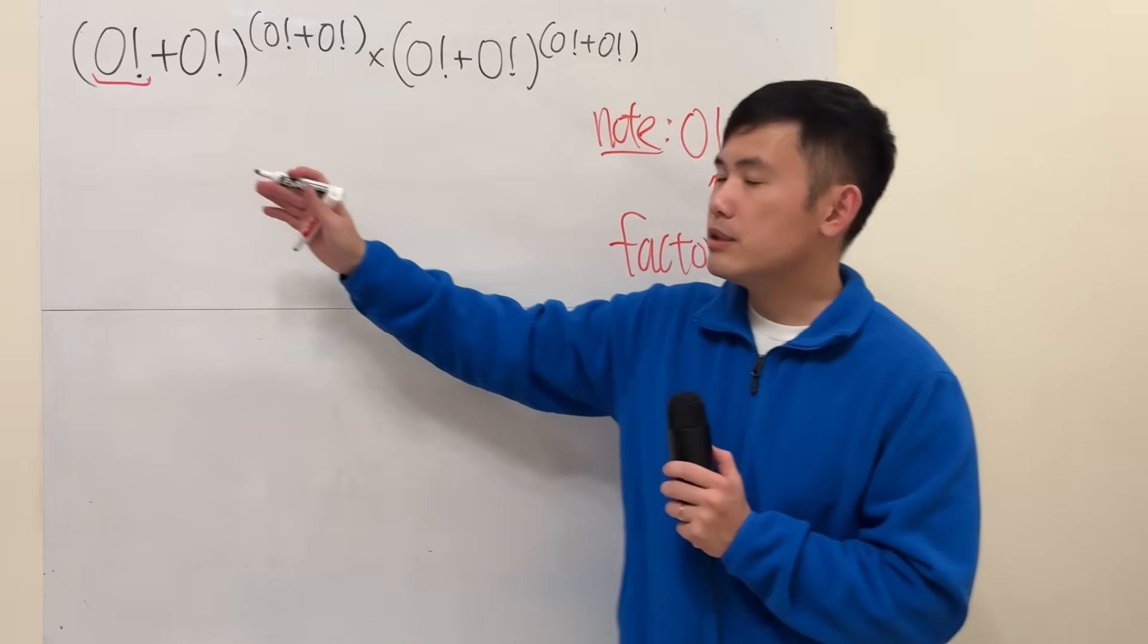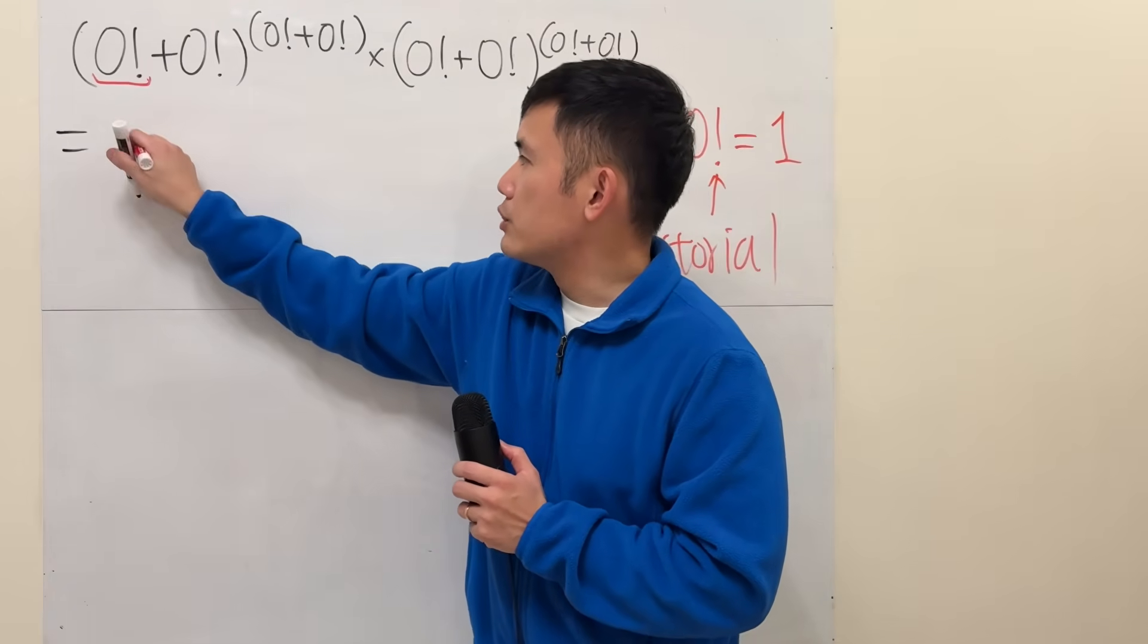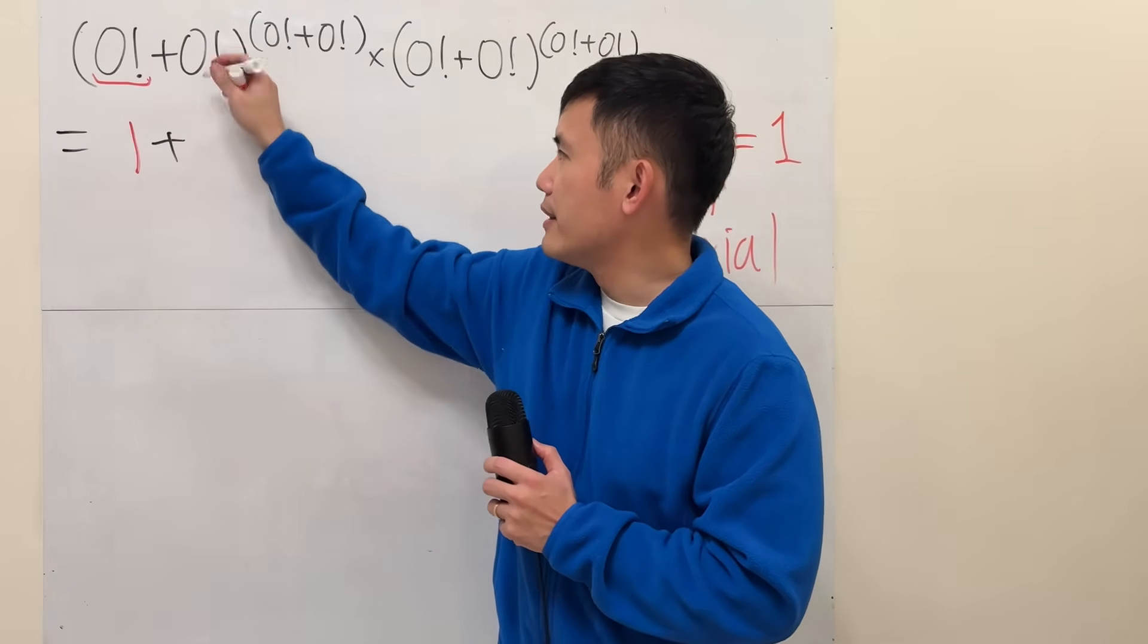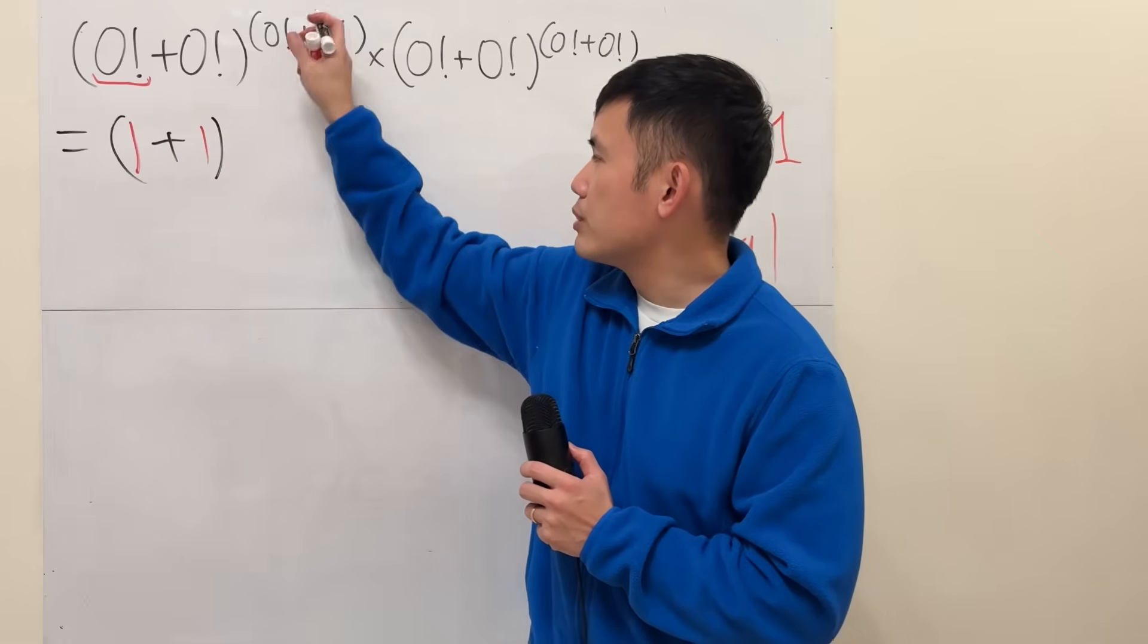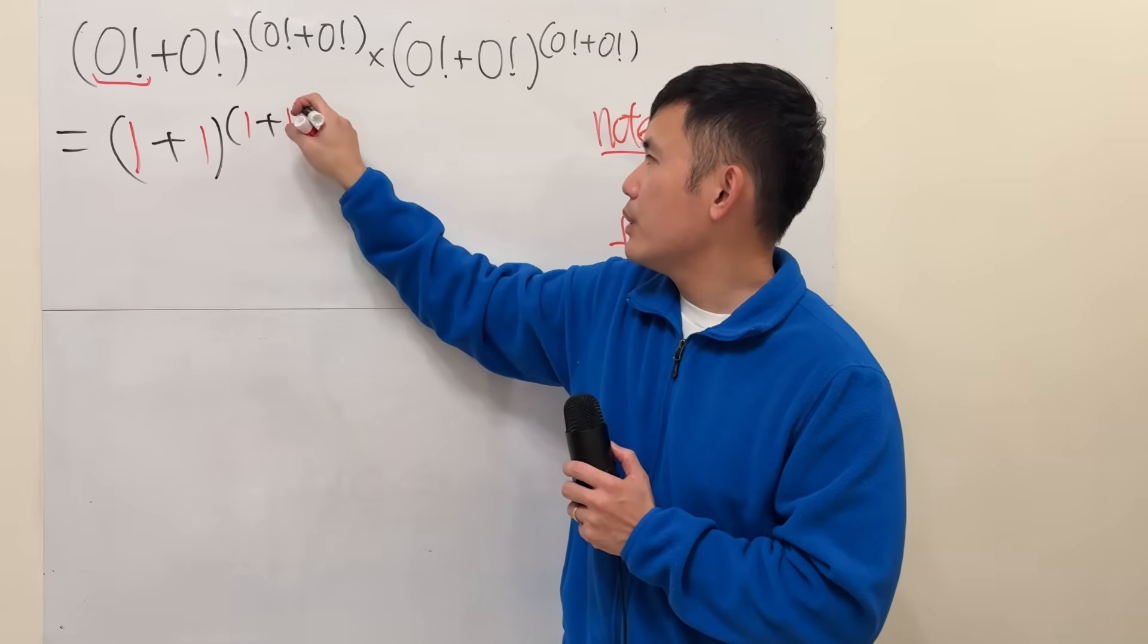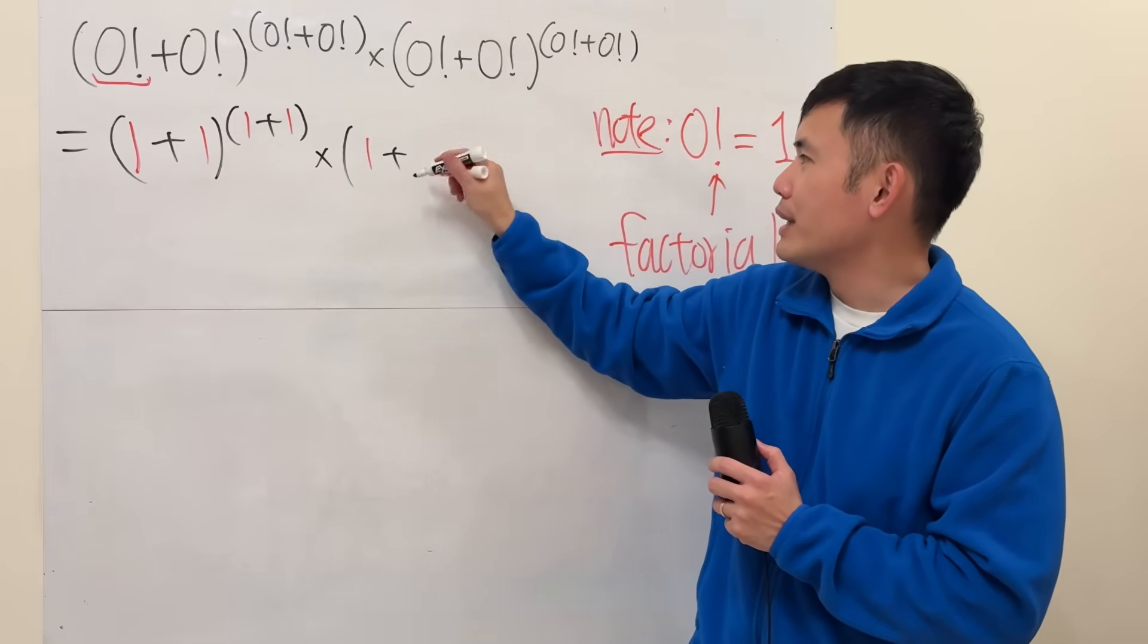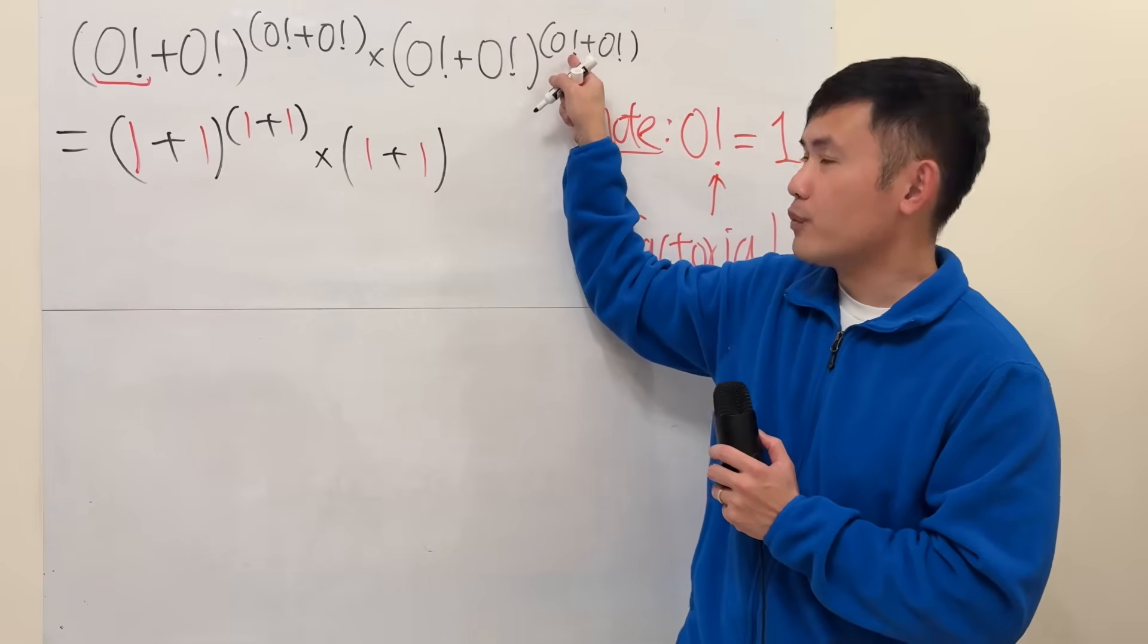But let's just finish the computation. So this is just one, and then we add another one and raise to the power of one plus one. And then we multiply which is one plus one raised to the power of one plus one.